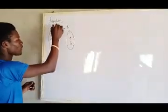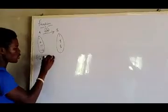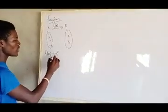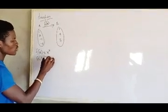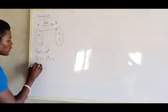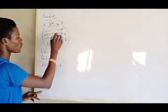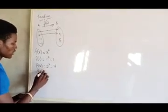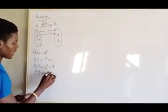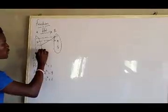Let's say our function is f(x) = x². So f(1) = 1² = 1, f(2) = 2² = 4, f(-1) = (-1)² = 1, so minus one maps to one, and (-2)² = 4, so minus two also maps to four. This is a function.